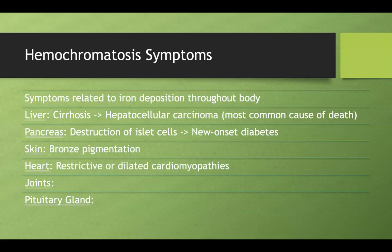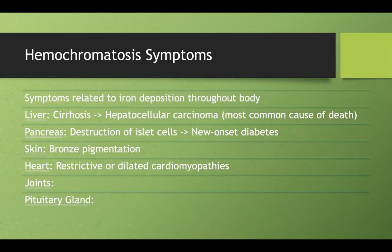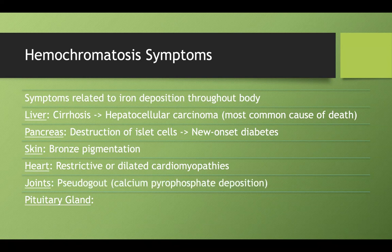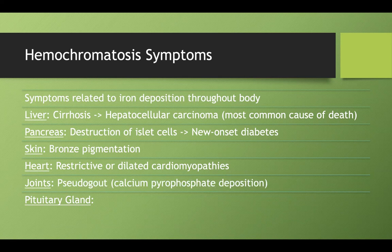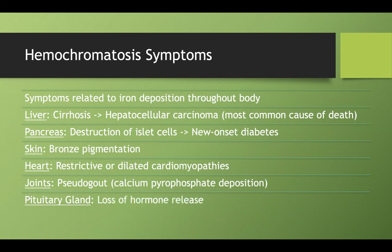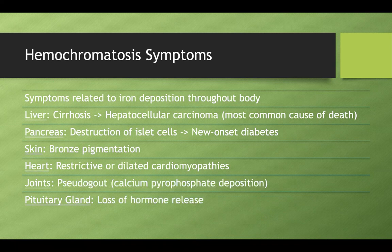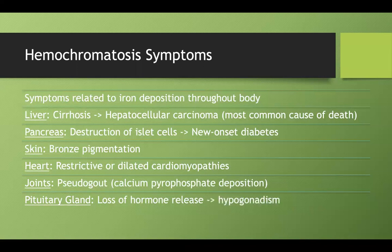In your heart, the deposition can cause either a restrictive cardiomyopathy or a dilated cardiomyopathy. If you have iron in your joints, you can get pseudogout, which is calcium pyrophosphate deposition. This seems kind of low yield, but I've seen this on a number of tests where they give you somebody with calcium pyrophosphate disease and other symptoms that appear nonspecific at first, but then you realize it's actually part of this entire hemochromatosis clinical picture. So I would remember that calcium pyrophosphate, that pseudogout. Finally, if you have iron deposited in your pituitary gland, you'll get a loss of hormones from your pituitary gland, which can lead to hypogonadism.